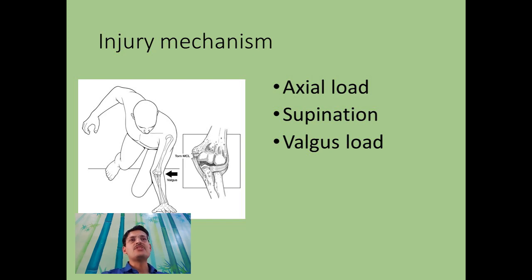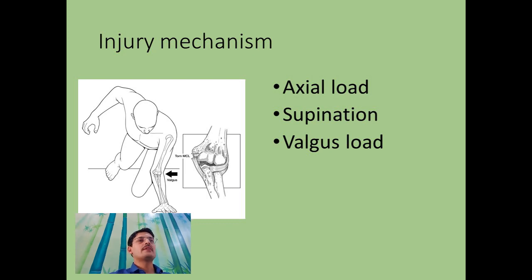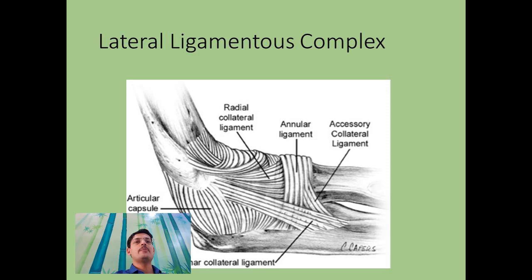Now turning to lateral instability, which is usually seen in elbow dislocations and can be part of the terrible triad. It typically happens with an axial load, supination, and a valgus load. The lateral ligament complex is composed of the lateral ulnar collateral ligament (LUCL), which is the main ligament, along with the annular ligament and the radial collateral ligament. The LUCL is the primary restraint to posterior lateral rotatory instability (PLRI).